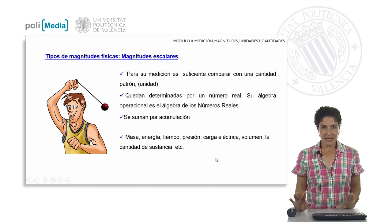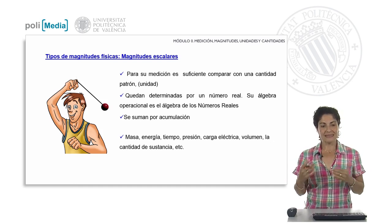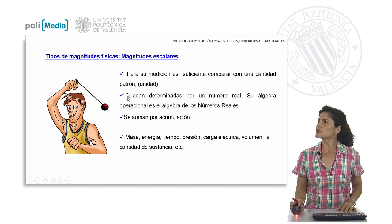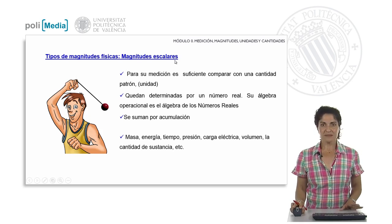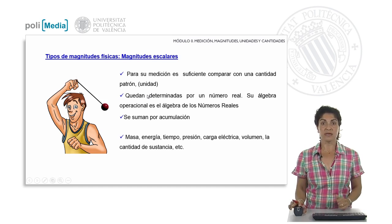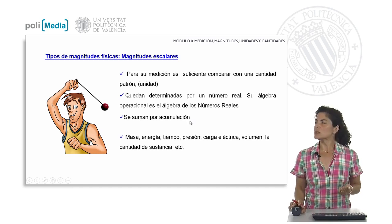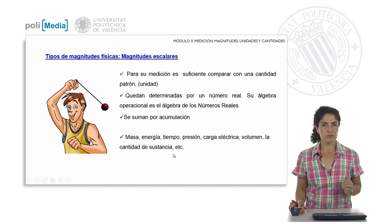Physical quantities are further divided into two large groups, depending on the amount of information we need for them to be perfectly determined. The first group is scalar quantities: those that, in order to be perfectly determined, we only need a real number — a numerical value. Their algebra is the algebra of real numbers, and they are added by accumulation. Examples of scalar quantities are mass, energy, time, and so on.